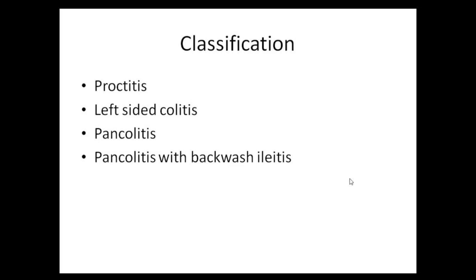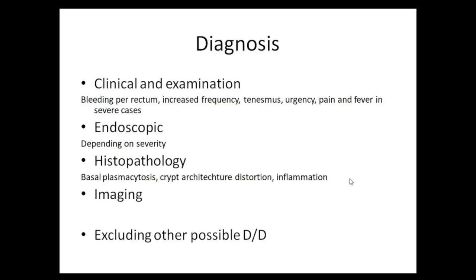Based on severity and involvement, pancolitis patients may require ileo-colonoscopy once every three years, whereas proctitis and left-sided colitis do not have such a stringent screening protocol. Clinically, patients initially present with increased frequency of stools; as severity increases, the frequency increases and bleeding per rectum occurs.